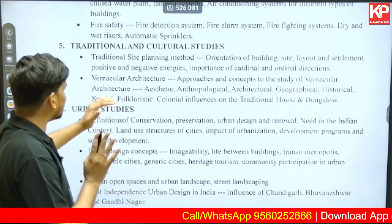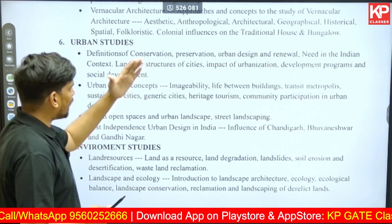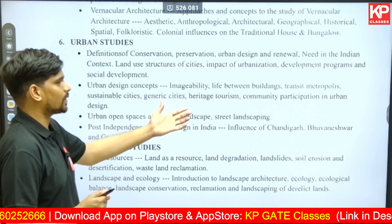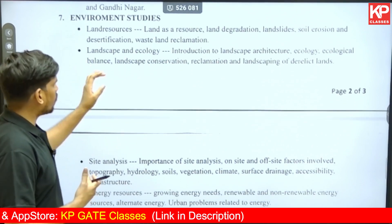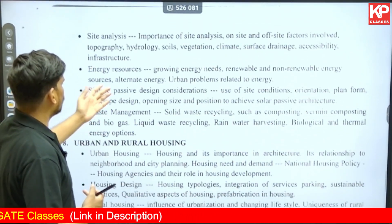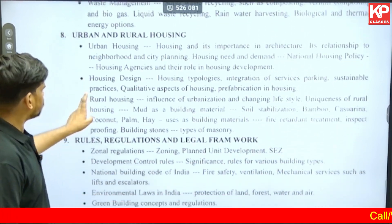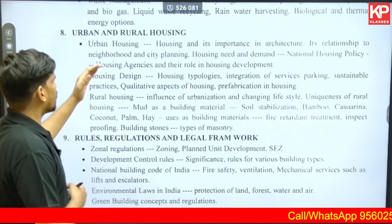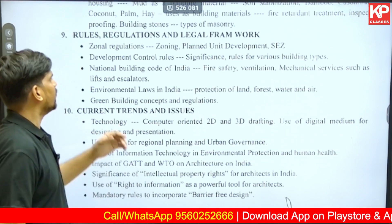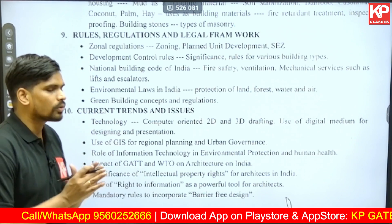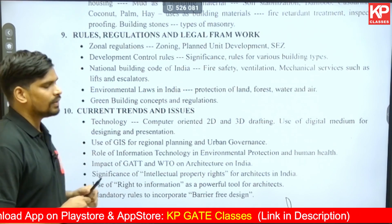The fifth section is Traditional and Cultural Studies, focused on the study of vernacular and cultural architecture. The sixth section is Urban Studies, covering conservation and urban design — including concepts like imageability and other famous urban design principles. The seventh section is Environmental Studies, which includes landscape and ecology, passive design techniques, passive solar architecture, and solid waste management. The eighth section is Urban and Rural Housing, covering housing design and the principles of urban housing.